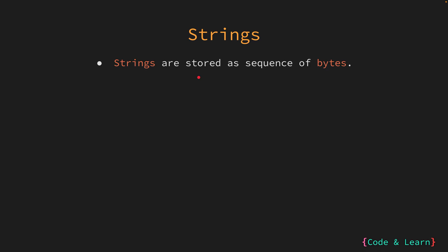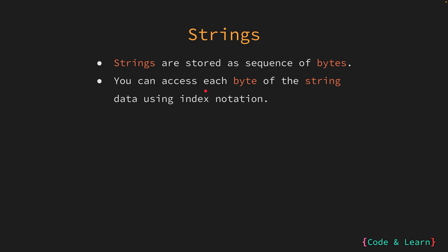In programming, strings are essentially sequences of individual characters. In Go, strings are stored as a sequence of bytes, where each character is represented by one or more bytes according to the encoding used — usually UTF-8. You can access individual bytes of strings using index notation, and just like arrays and slices, you can use slice expressions with strings to extract a portion of a string efficiently.